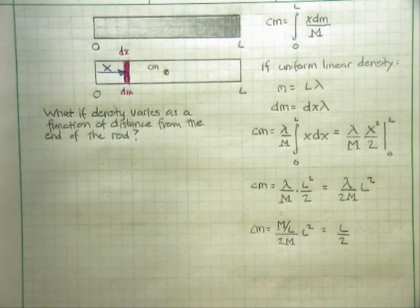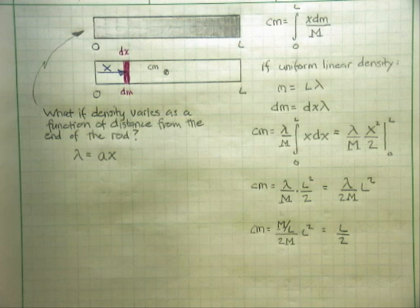Well, what if density varies as a function of distance from the end of the rod? The multiple choice question gave a more obscure function. I'm going to clean this up. We're going to say lambda equals a times x. All that's saying is, when you're at x equals 0, the density is 0. You go all the way out to the end of your bat, and the density is going to be a times L. There's a linear relationship between where we are from 0 to L and how we describe that density.